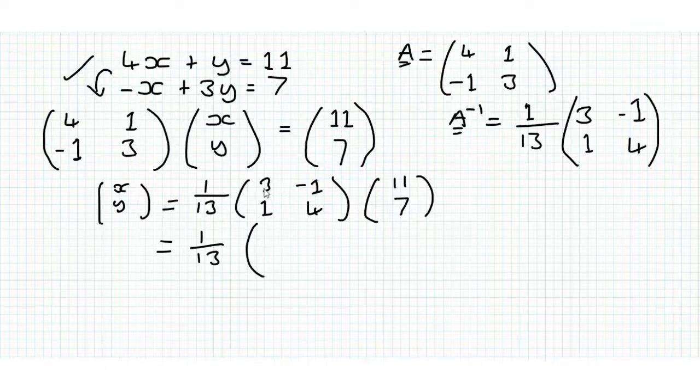And we do 3 times 11, that's 33, minus 7, 26. And then we do 1 times 11, plus 4 times 7. So that's 11 plus 28, which is 39.